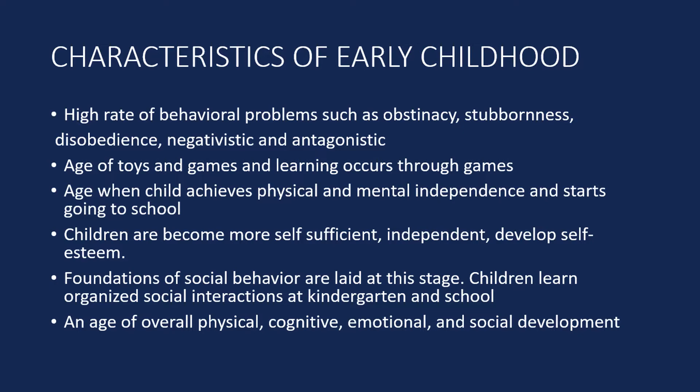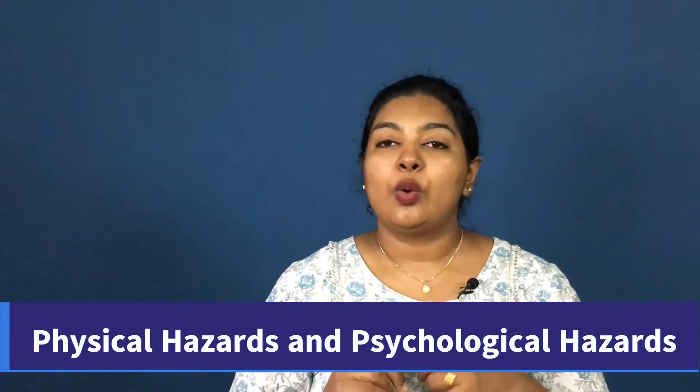Let's move on to the hazards that occur in early childhood. These can be split into two types: physical hazards and psychological hazards. The first physical hazard is illness. If a child is highly susceptible to illness, has repeated viral attacks, or has respiratory problems, there's a chance they will have a lot of gaps in their playtime and time spent with other people. Because of these prolonged periods of absence, they fall behind in socializing.